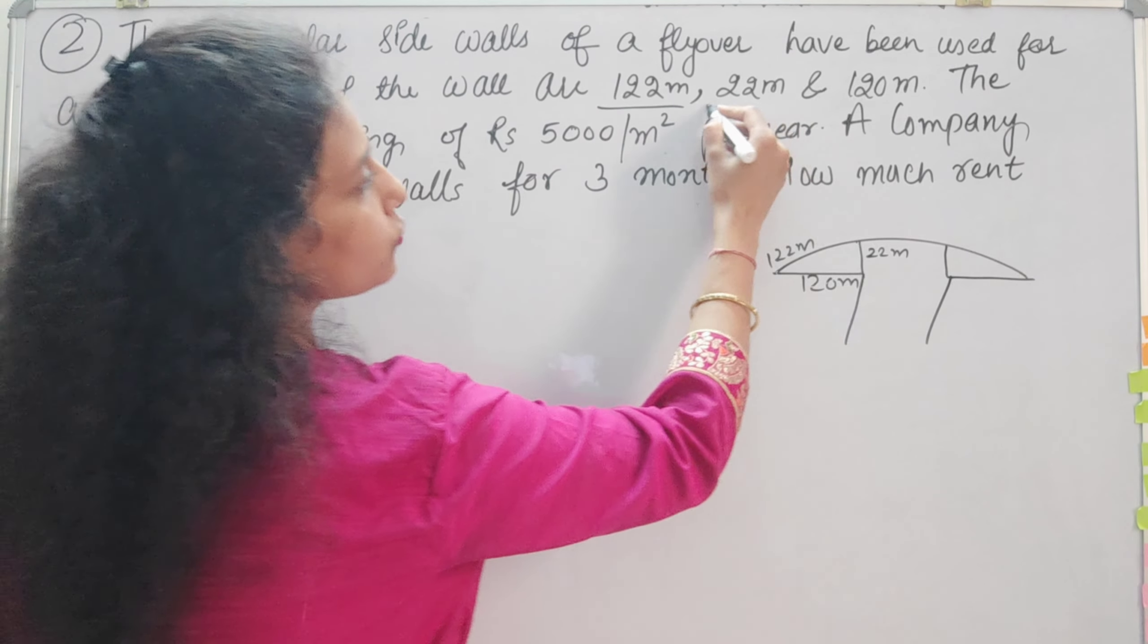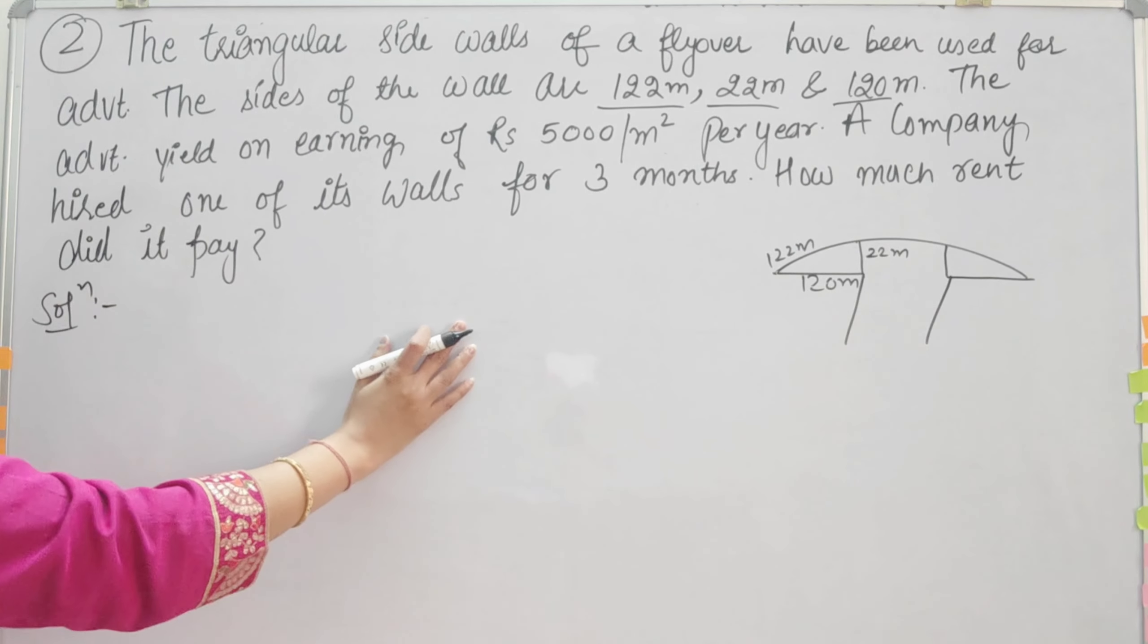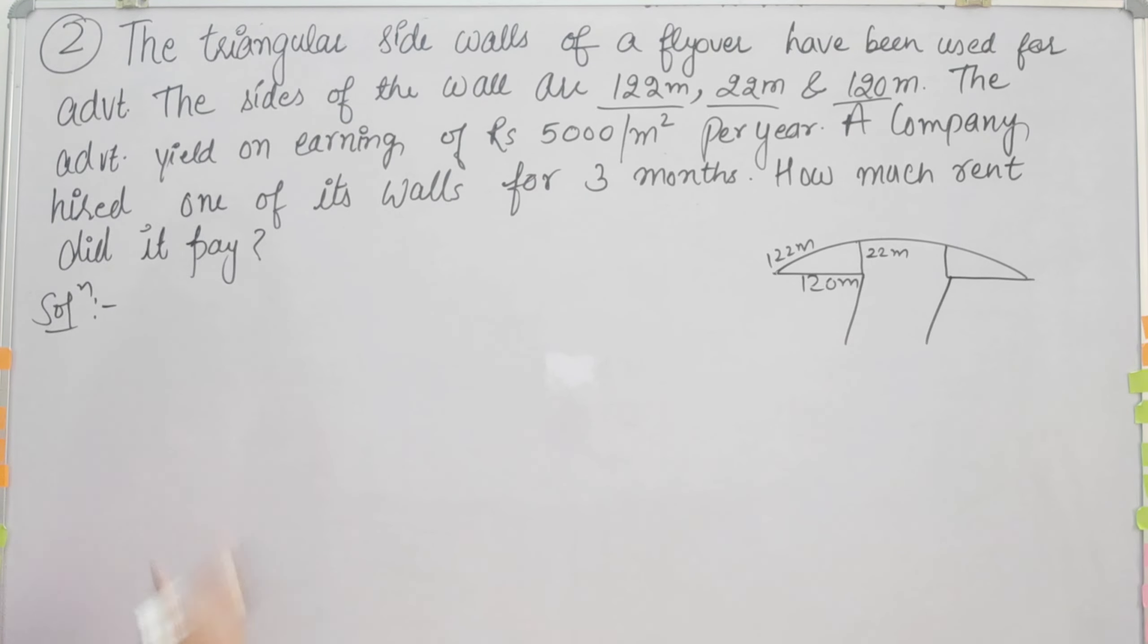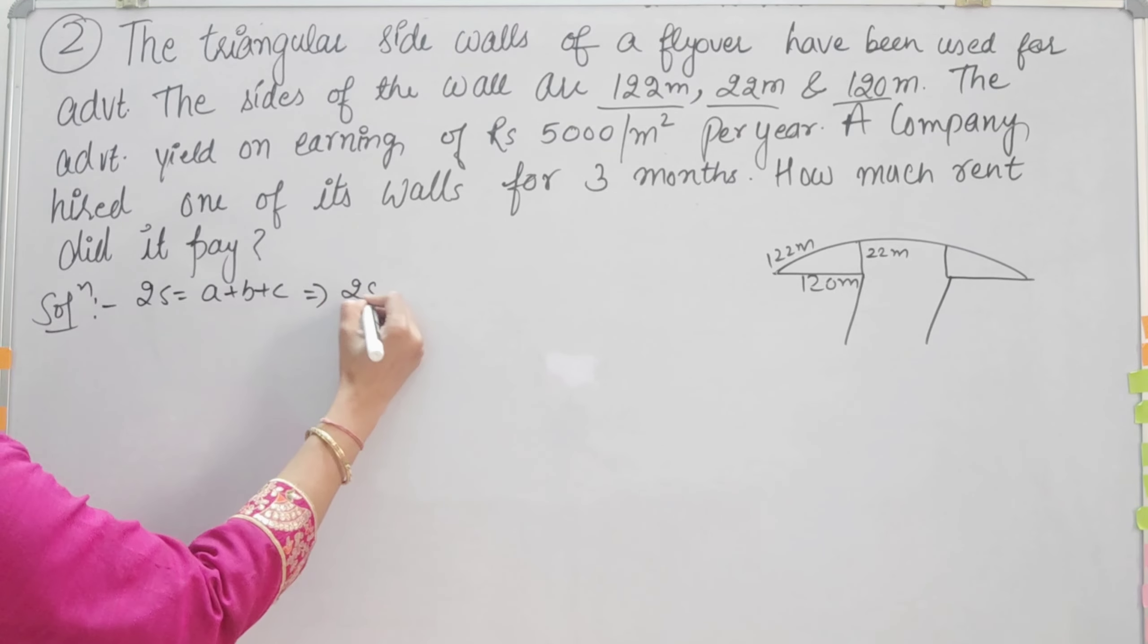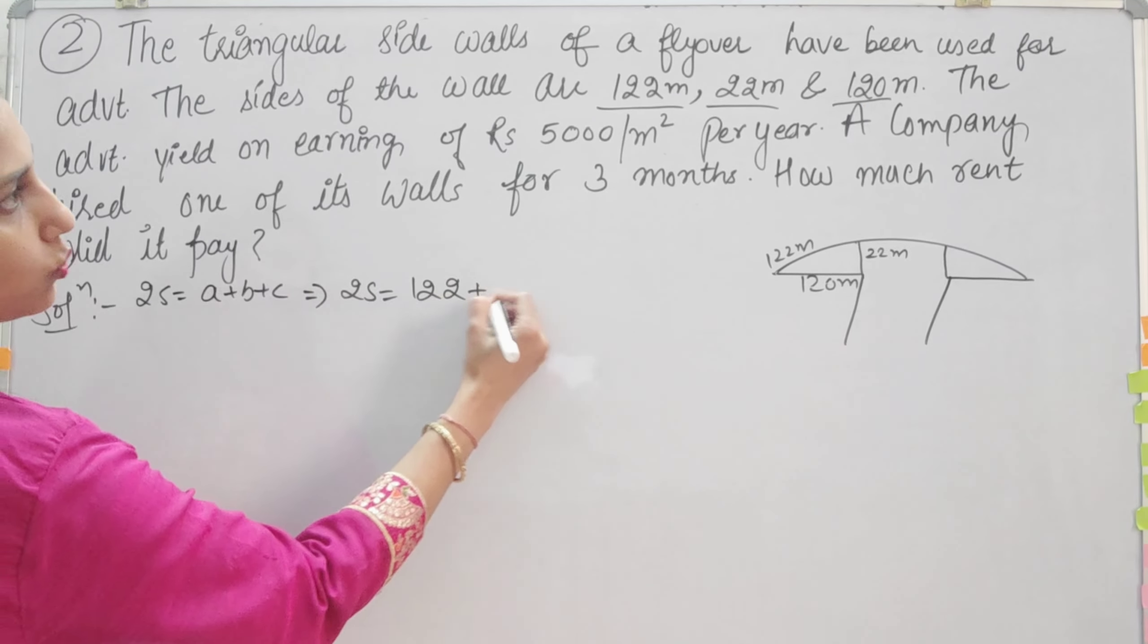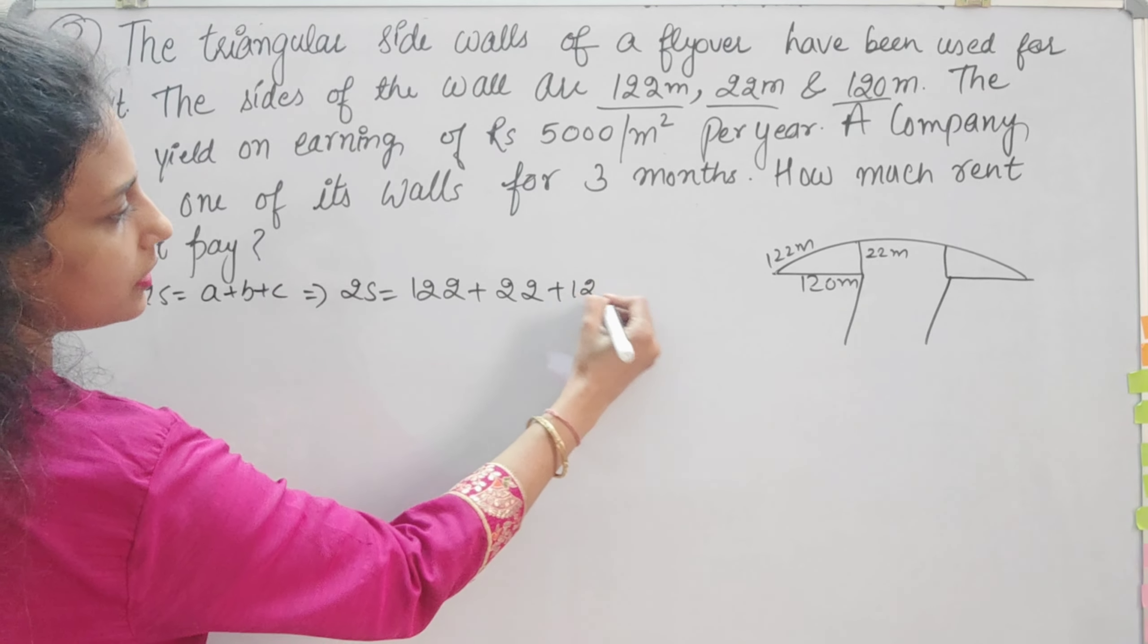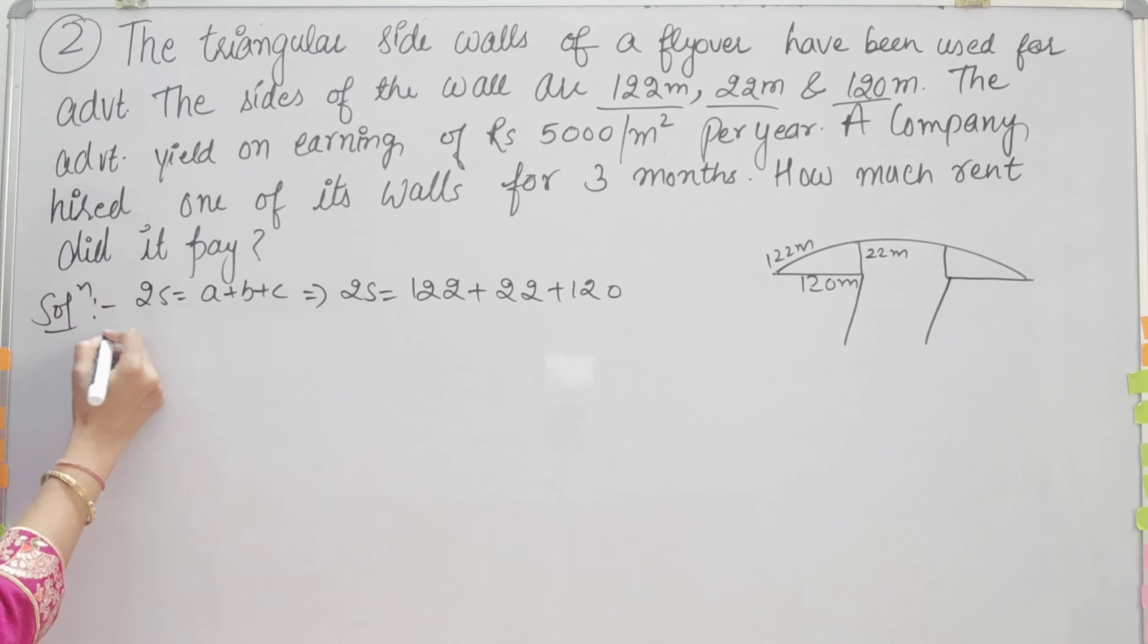We have to find out how much rent it will pay for 3 months. The sides are 122m, 22m, and 120m. We cannot find the area directly, so see, 2s is equal to a plus b plus c, which implies 2s equals 122 plus 22 plus 120.